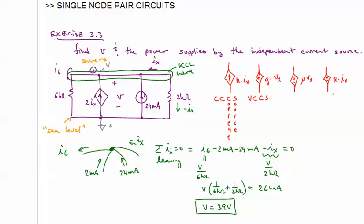Then we have these two dependent voltage sources. This is a voltage-controlled voltage source, and this is a current-controlled voltage source.